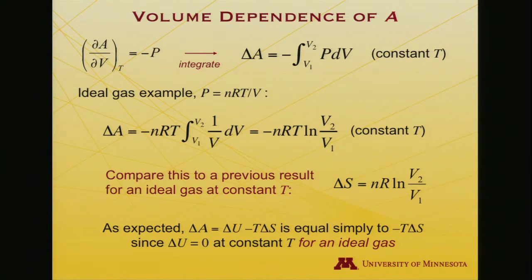And that's just what we expect actually for an ideal gas. Remember delta A is equal to delta U minus T delta S. But on what does delta U depend for an ideal gas? It only depends on temperature. And as a result, if we're working at a constant temperature, delta U is zero. So sure enough, delta A ought to be minus T delta S. And here's the proof indeed that it is.